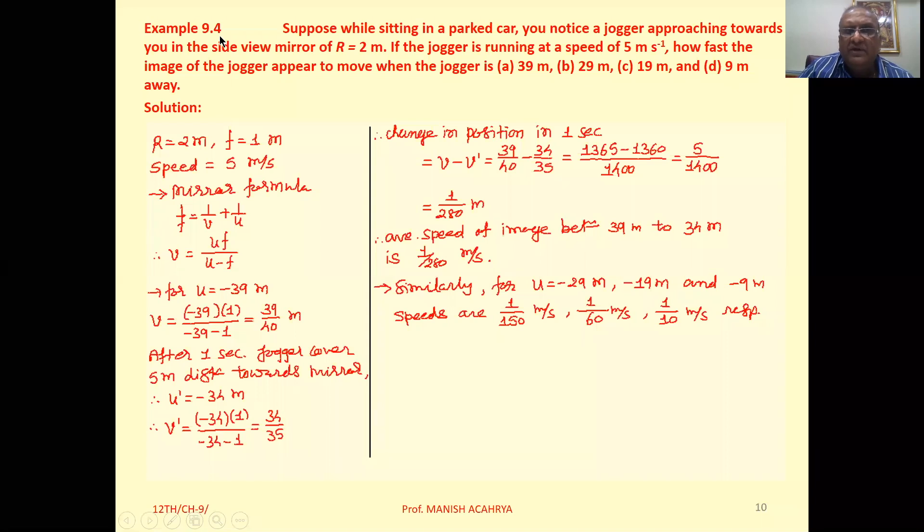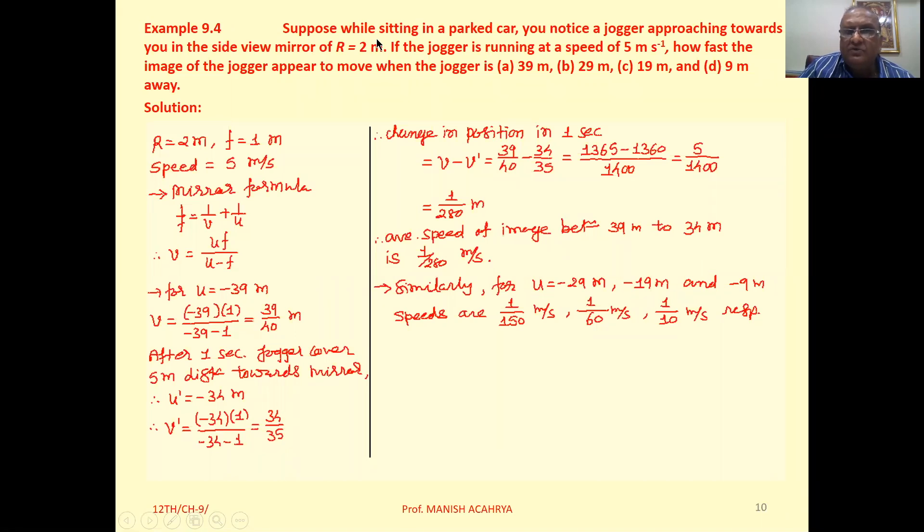Example 9.4: Suppose while sitting in a parked car, you notice a jogger approaching towards you in the side view mirror of r equal to 2 meter. If the jogger is running at a speed of 5 meter per second, how fast does the image of the jogger appear to move?